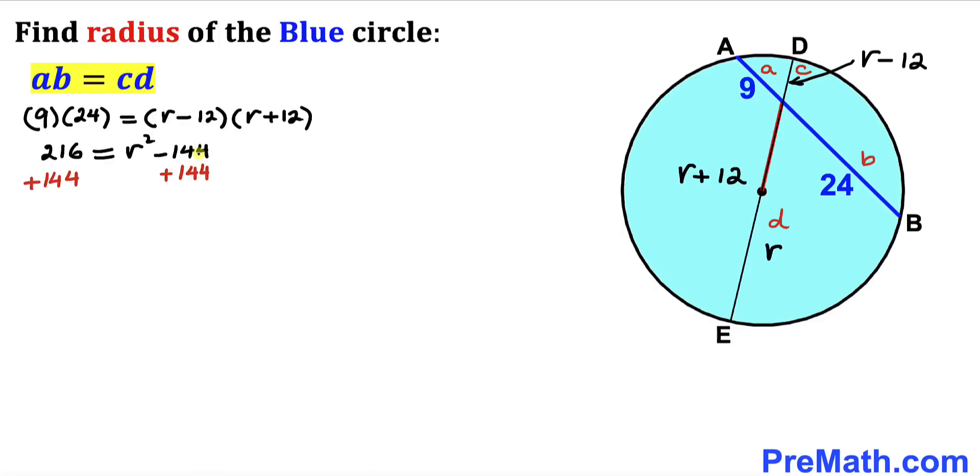Now let's add 144 to both sides. Therefore r squared is going to equal 360.